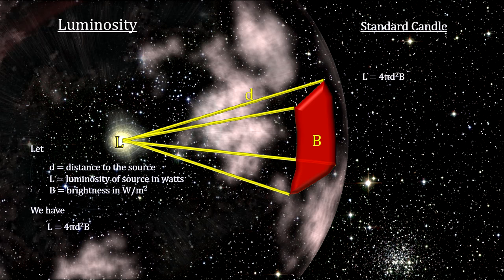But if we had a way to know what the intrinsic luminosity of a star was, we could use that, along with the apparent brightness, to get the distance.